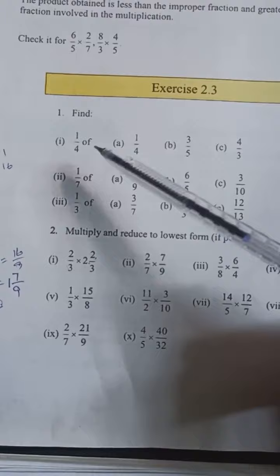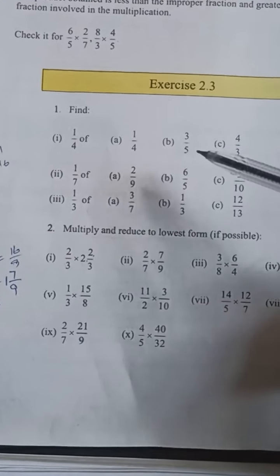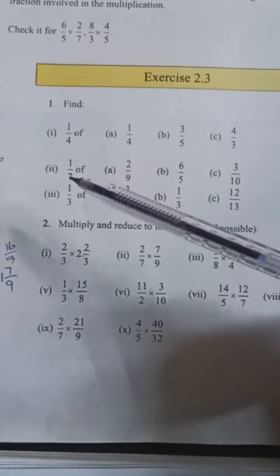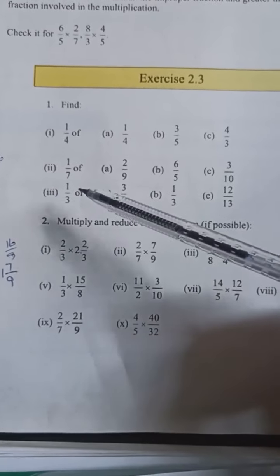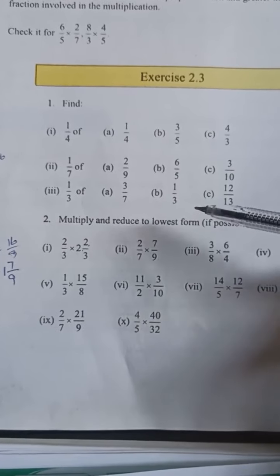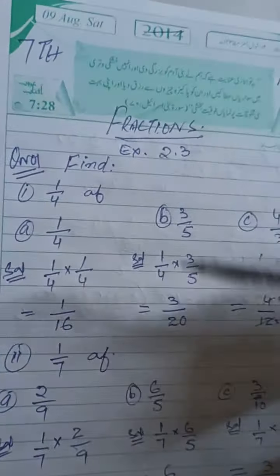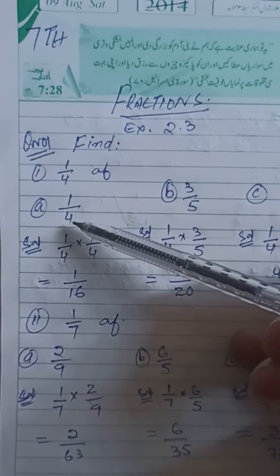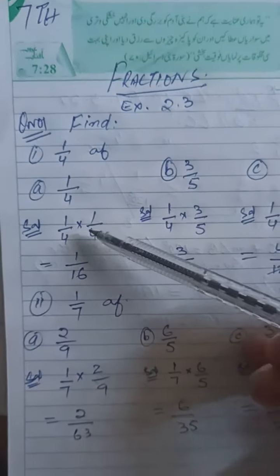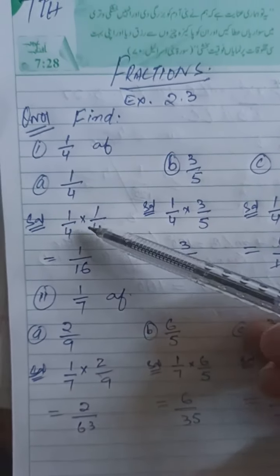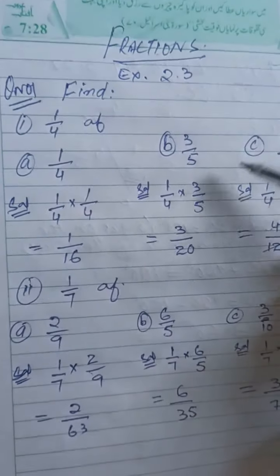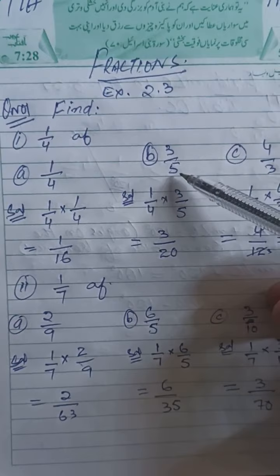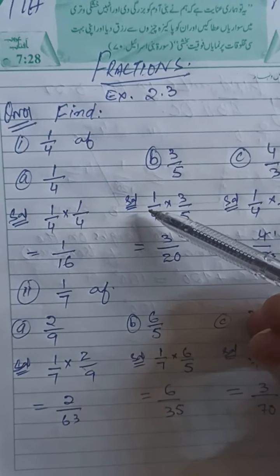1 by 4 of 1 by 4, so you multiply. 1 by 4 is 3 by 5 is 4 by 3. 1 by 7 is 2 by 9 is 6 by 5 is 3 by 10 is 3 by 3 is 3 by 7 is 1 by 3 is 12 by 13. 1 by 4, off. 1 by 4 into the most 1 by 4. So 1 by 1 is 1, 4 by 4 is 16.